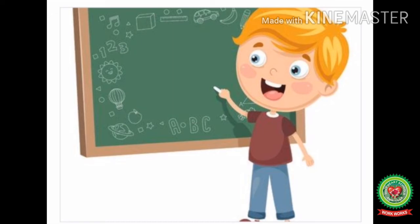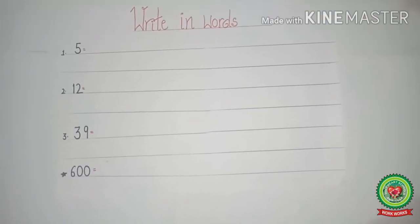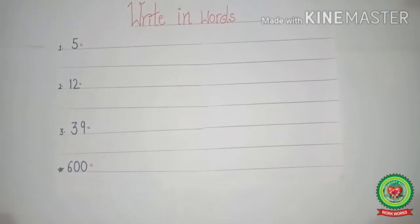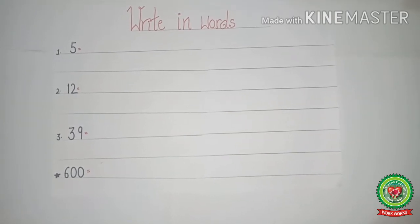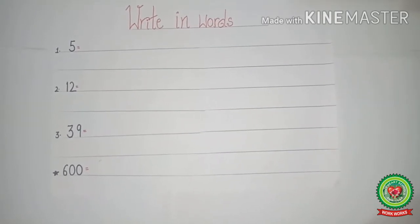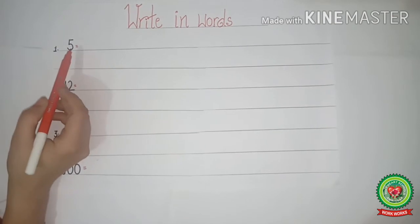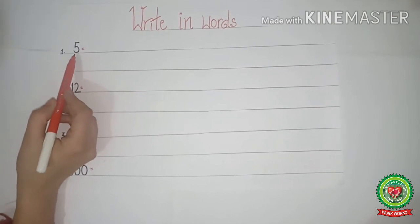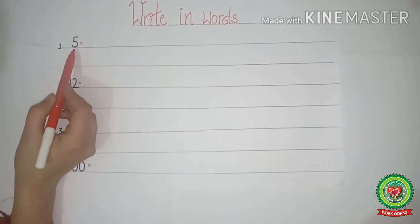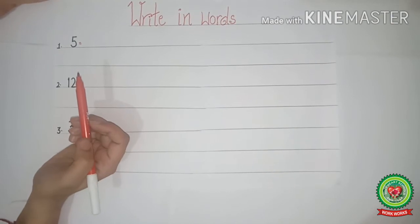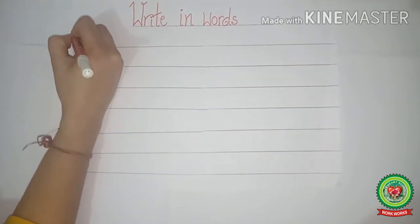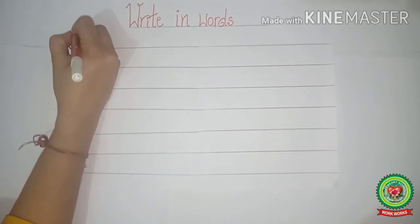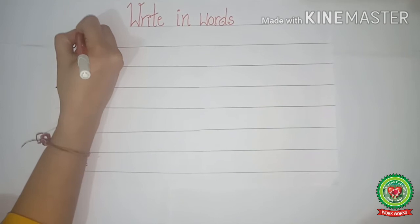Now kids, I will teach you how to write a 3-digit number in words. Before that, let's revise what you have already done in KG standard. Number 1 is 5. Now we will write spellings of 5. Before that, we will write the place value chart above, that is 1s.